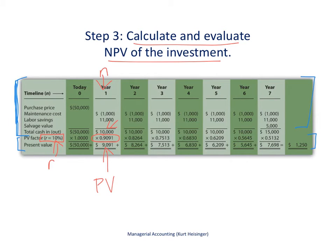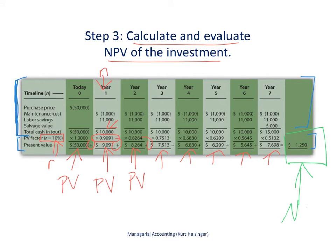That $9,091 is what the year one cash flow is worth today, in today's dollars. The same process is applied to the remaining years: year two gives $8,264, and so on through year seven. We then add all of these present values together, including the initial $50,000 cash outflow — which is already in present value terms since it occurs today. Summing all of these, the net present value of this investment is $1,250, which is a positive number.